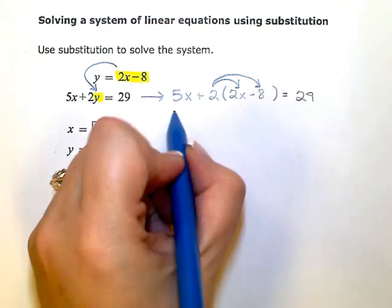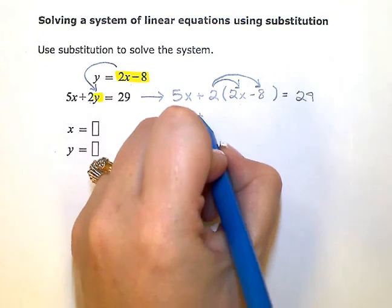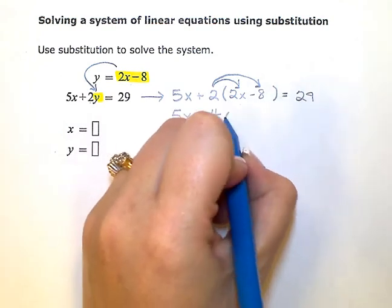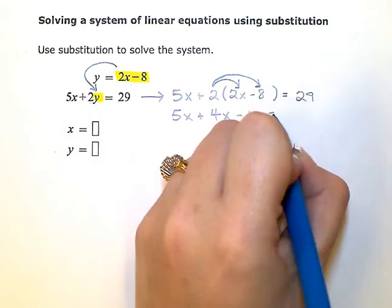So if I go ahead and simplify now, I'm going to have 5x plus 2 times 2x would be 4x, 2 times negative 8 is negative 16, equals 29.